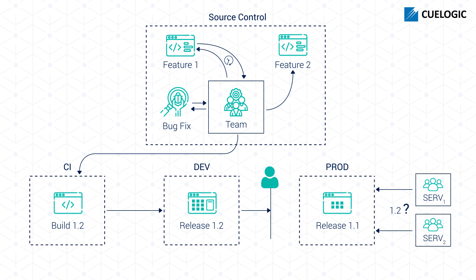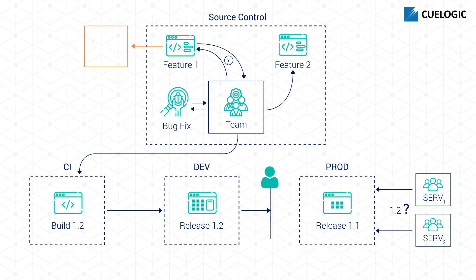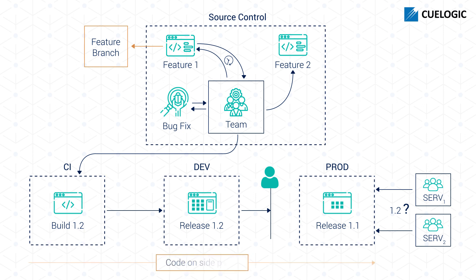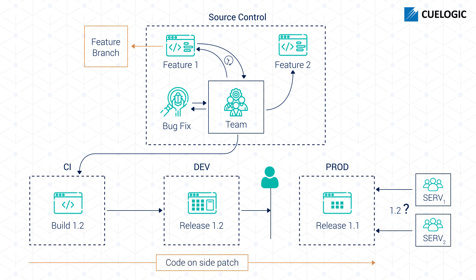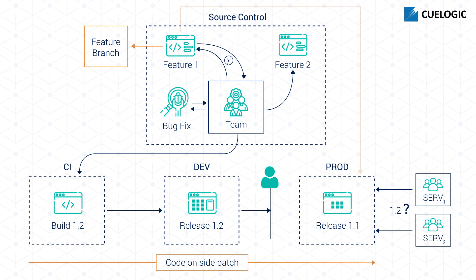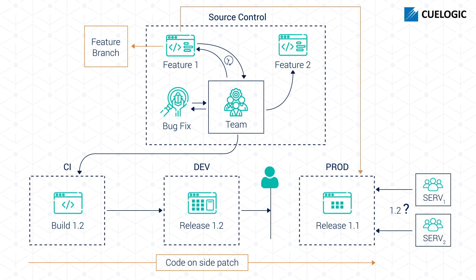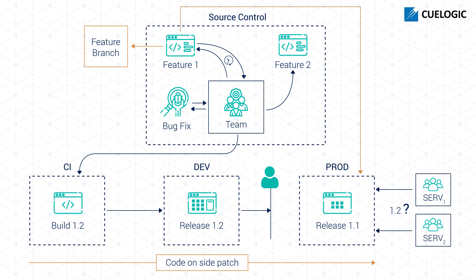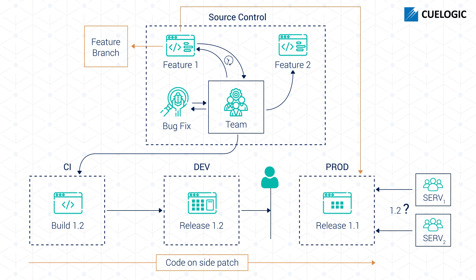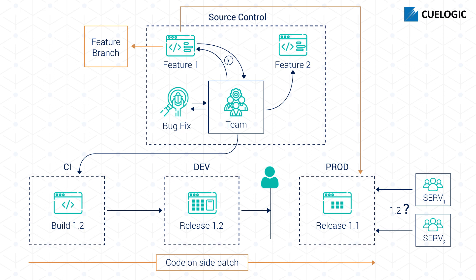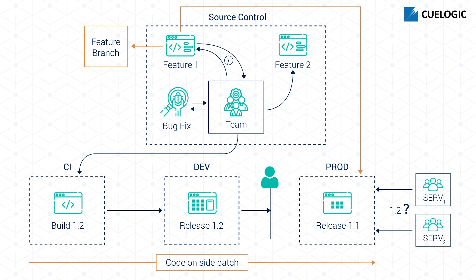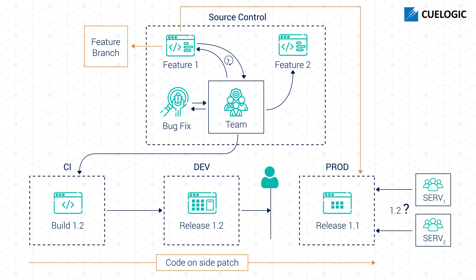Sarah knew that she had other ways around the problem. She could build off of a feature branch, move the necessary code through the pipeline on a side patch, or deploy a separate revision directly to production while skipping the dev environment. However, these were not very elegant fixes and they required quite a bit of coordination with others. Since this was a pipeline and a microservice, Sarah knew that the problem could be compounded from there. Therefore, she decided to build a solution using feature flags.